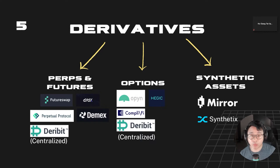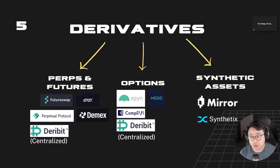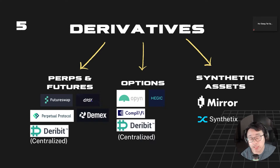They do have a funding rate. Usually when the funding rate is positive, it means there are more people longing the market, and therefore you have to pay a small interest — usually every eight hours or maybe once a day — to maintain the perpetual position. Perps are basically a way for investors to long or short an asset without actually owning it, using stablecoins as collateral.